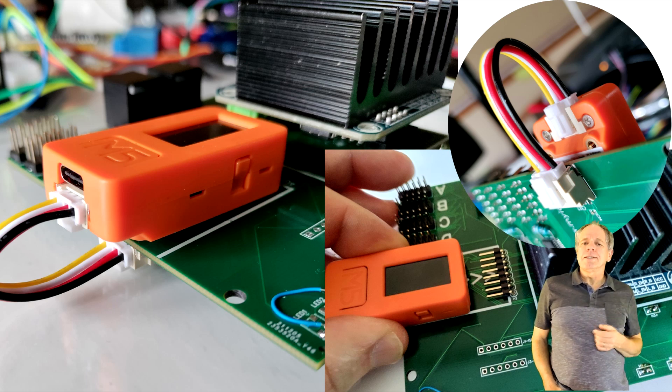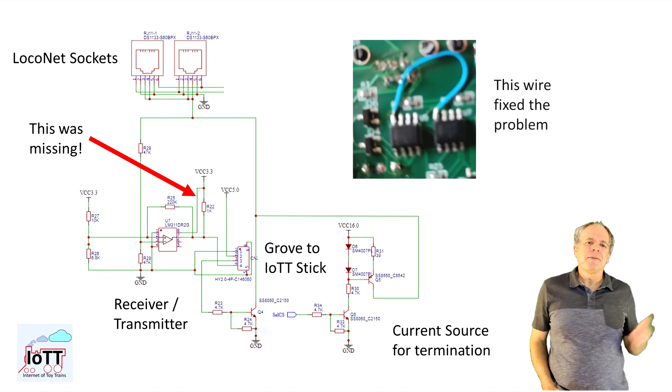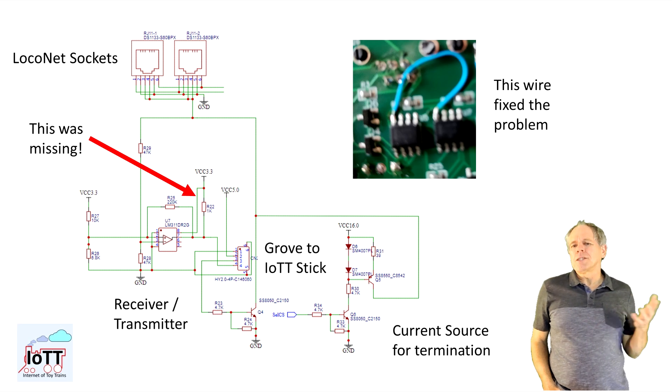For some reason, incoming messages would not make it to the stick. As it turned out, I forgot the power supply wire to the comparator chip and therefore the LocoNet signal was not sent to the stick. So I found another error in my design, but again, it was easy to fix. A short piece of wire soldered to a 3.3V point did do the trick and the LocoNet interface was working properly.